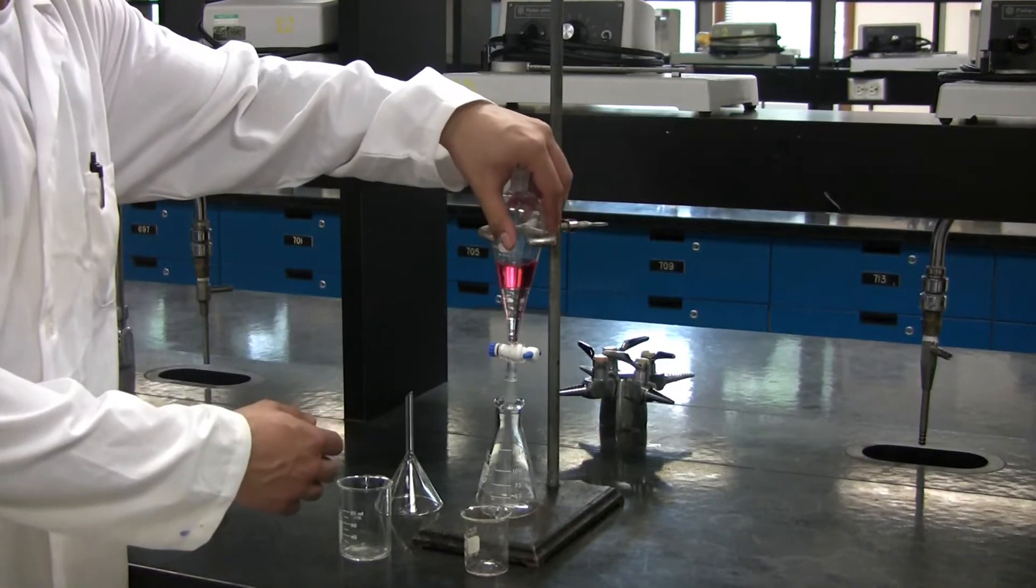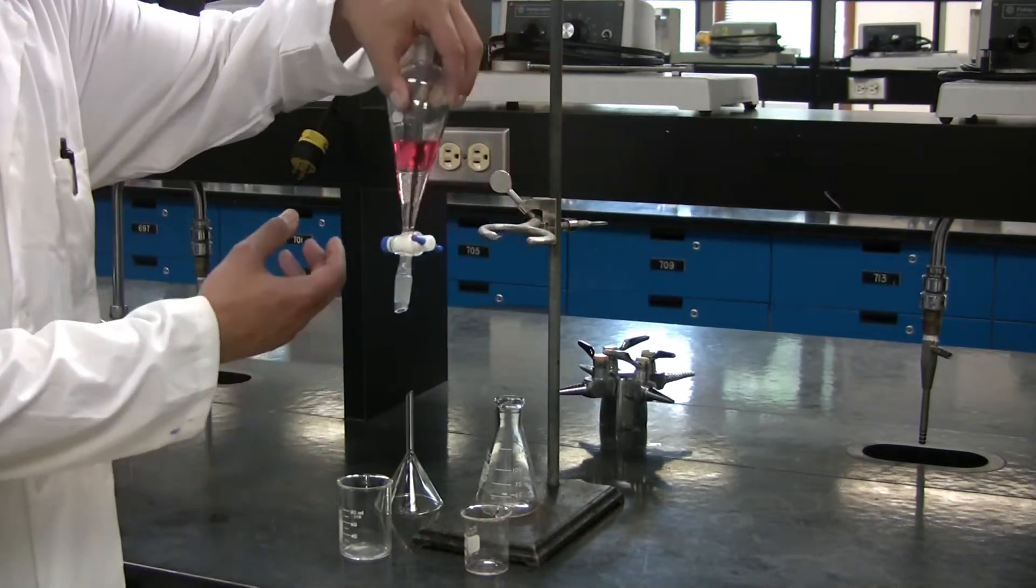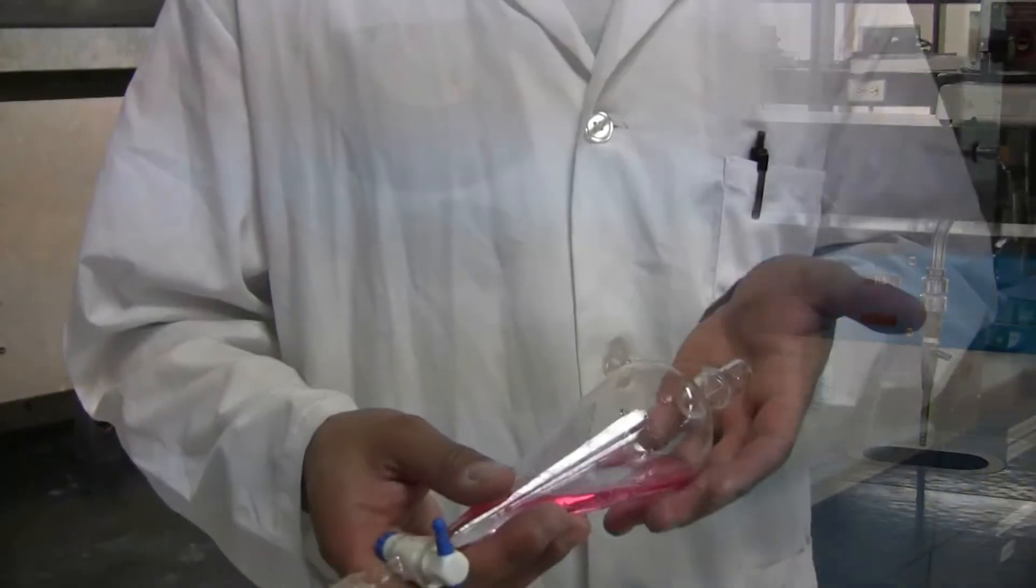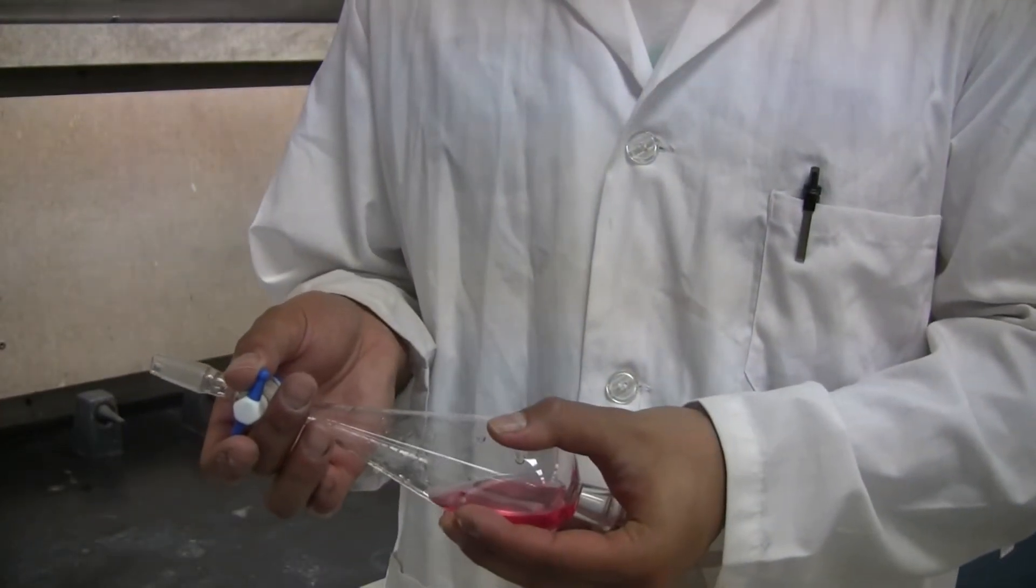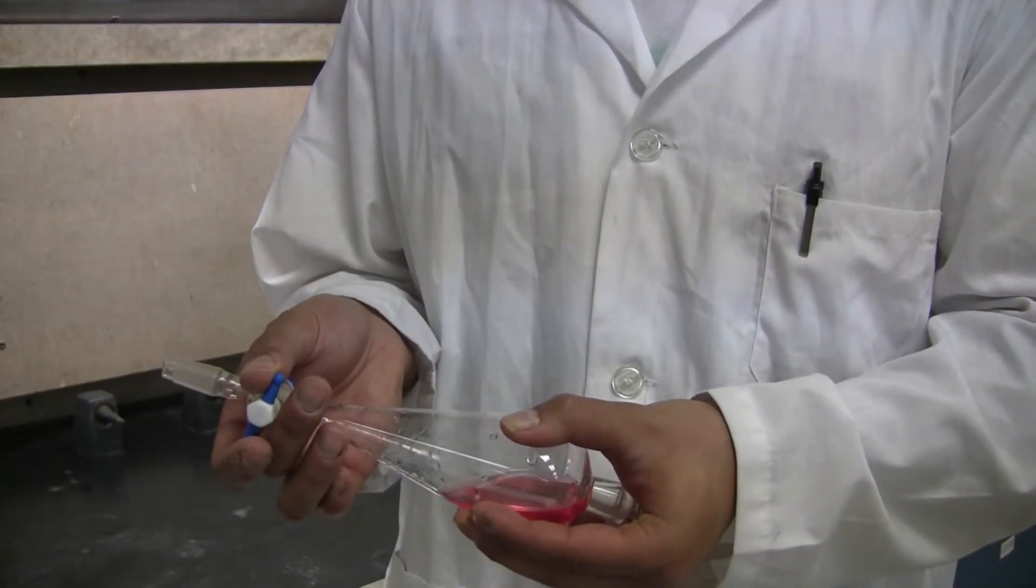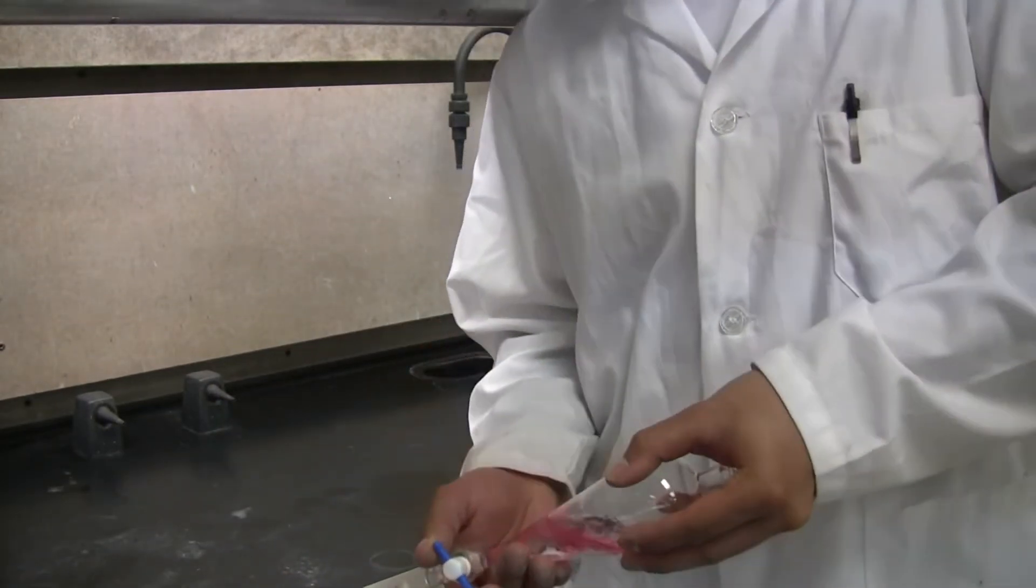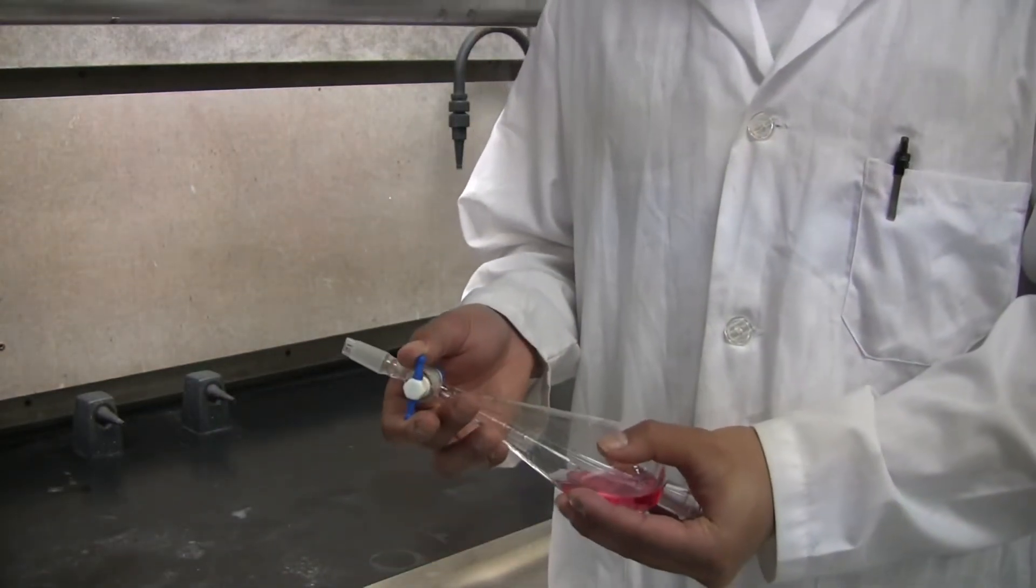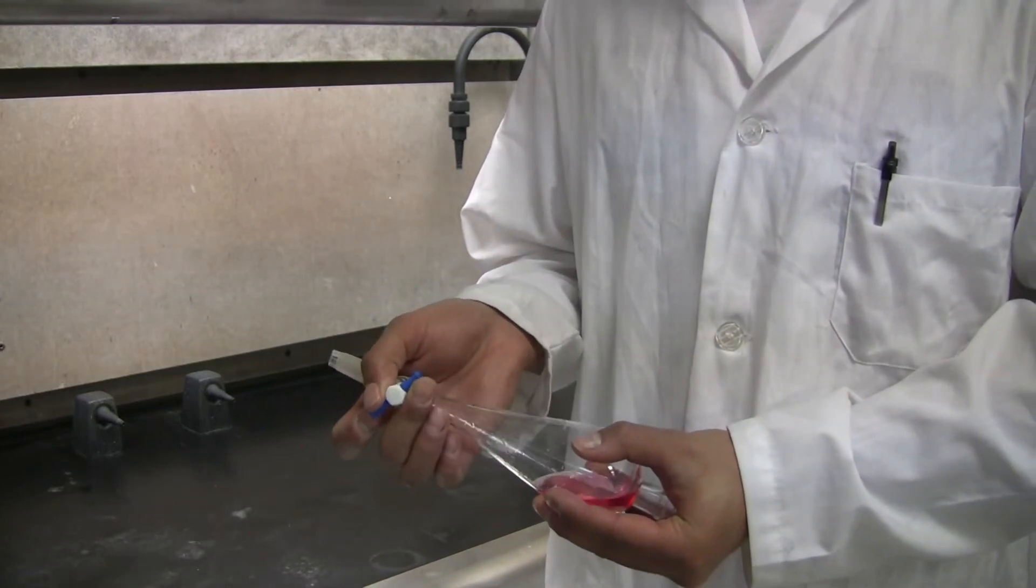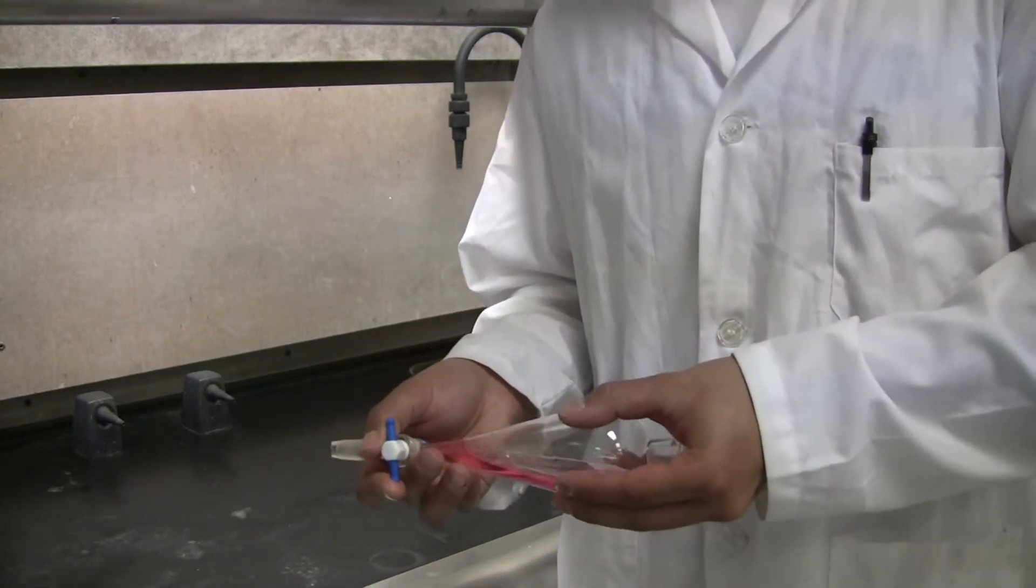Remove the separatory funnel from the ring clamp. Place the end of the glass cap into the palm of your hand. Now you can rock it back and forth, ensuring to mix the two layers sufficiently. Vent after every one or two rockings, and repeat this several times.